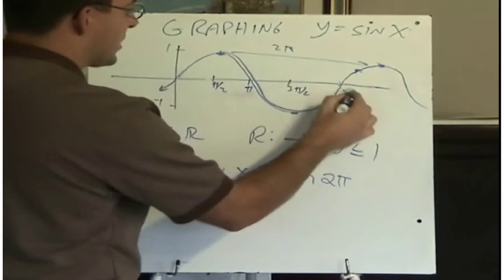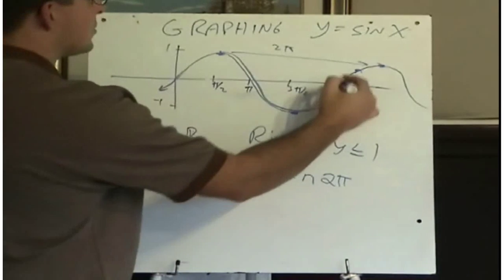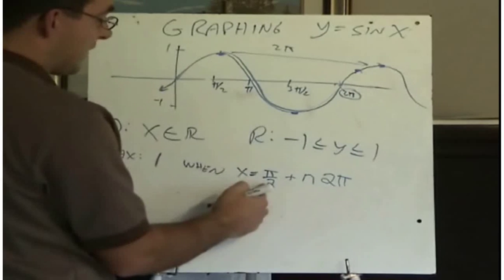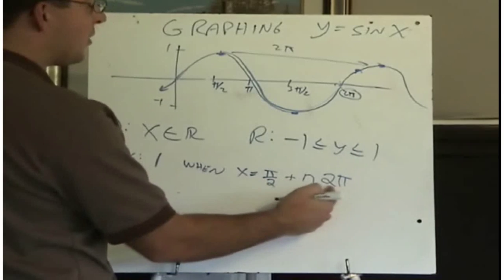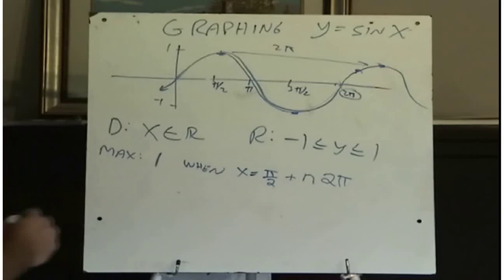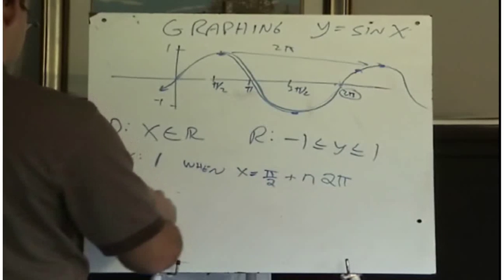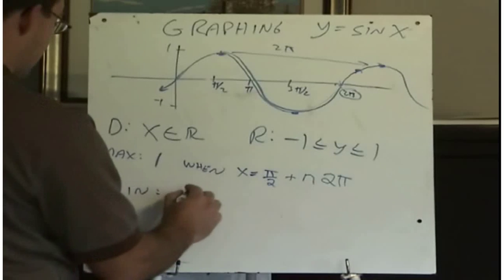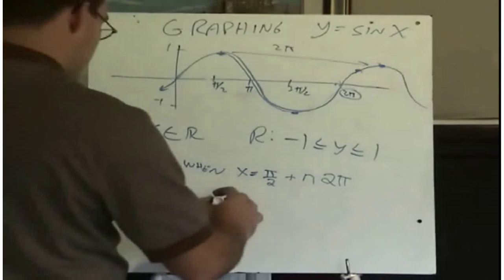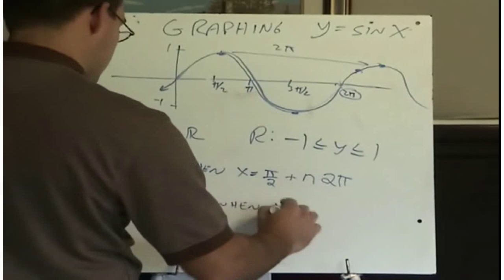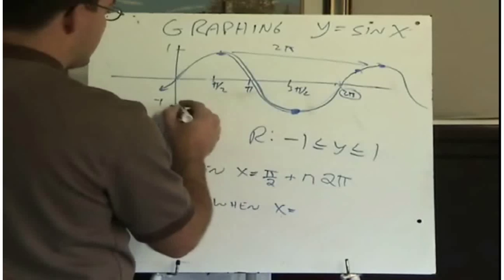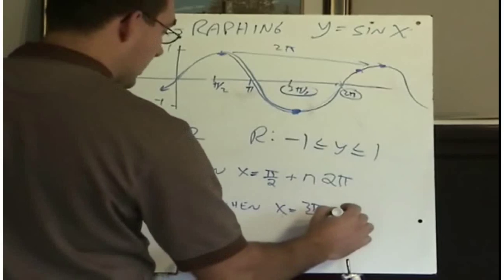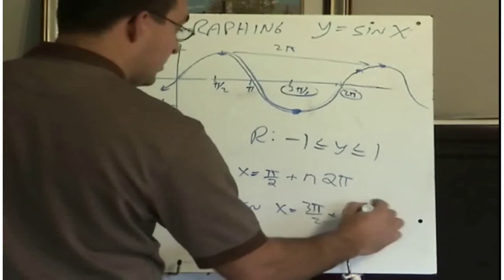A good way to express all this is: the maximum value is 1 when x is pi over 2 plus any multiples, so plus n times 2 pi — because from one peak to the next is a distance of 2 pi. It does one cycle every 2 pi, which is one complete circle. Similarly, its minimum value will be minus 1 when x equals 3 pi over 2 plus any multiples of 2 pi.